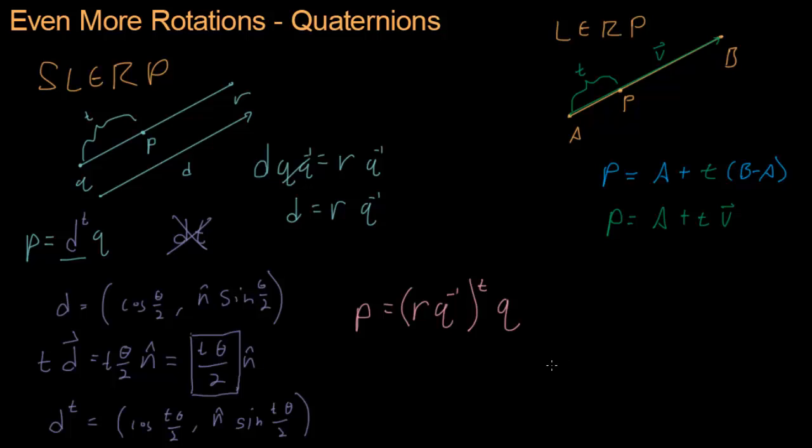So this is our formula for a spherical linear interpolation. So in the next video, we're going to show some examples and some applications of how you can use all this powerful quaternion stuff in a video game. See you then.